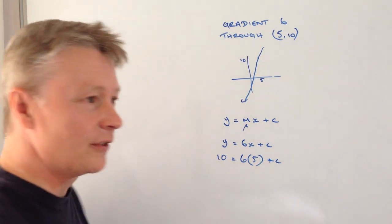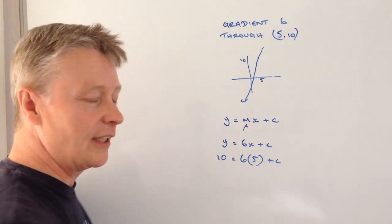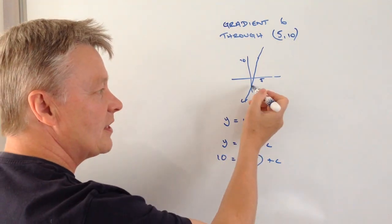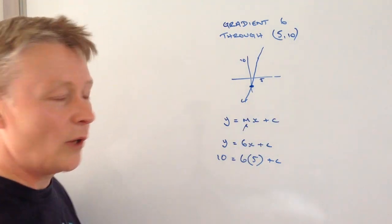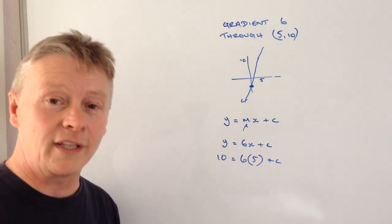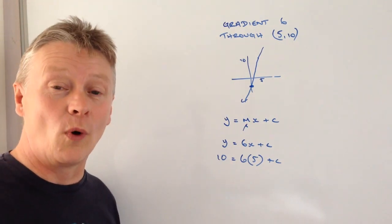And that is just a matter of using a little bit of algebra then to work out the value of c. And the value of c is actually this point here, it's where it crosses the y axis. Some people call it the y intercept.